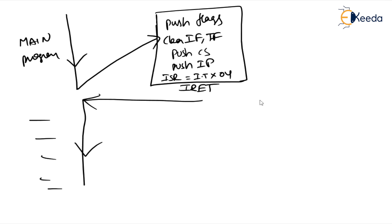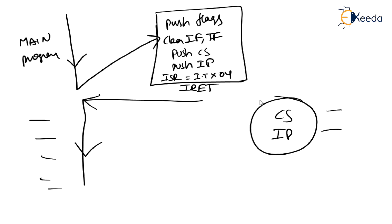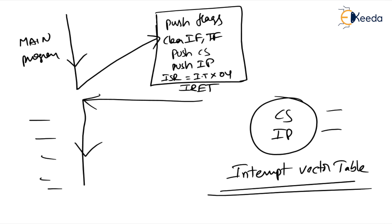In the next class, the question is: how do we get the values of CS and IP registers? This will be covered using the interrupt vector table. This will be discussed in the next class. Until then, thank you.